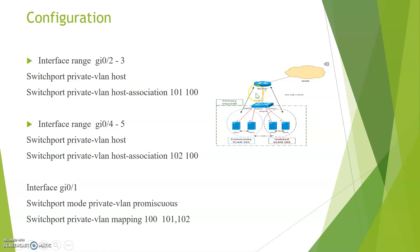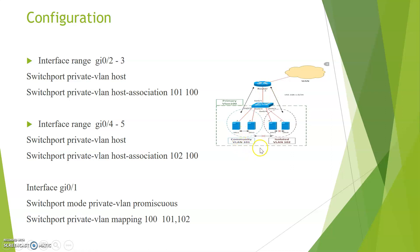Third, configure the promiscuous ports — that is, the ports connected to the router. Go to the interface, use 'switchport mode private-vlan promiscuous', then perform the mapping: 'switchport private-vlan mapping 100 101,102' — mapping primary VLAN 100 to community VLAN 101 and isolated VLAN 102.